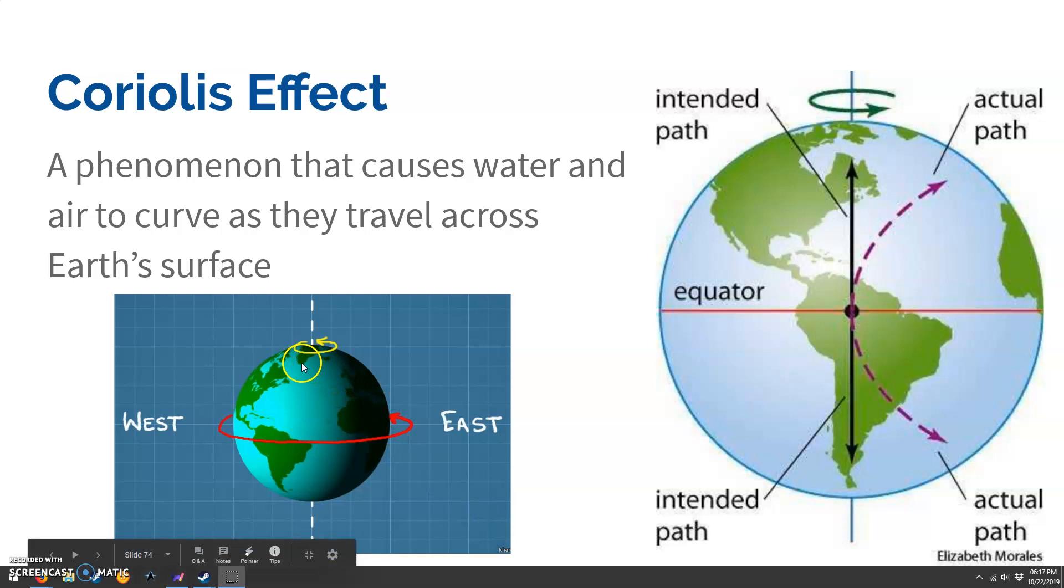it's smaller at the top and then wider at the center. So anything in the center has to move a lot faster than things at the poles.